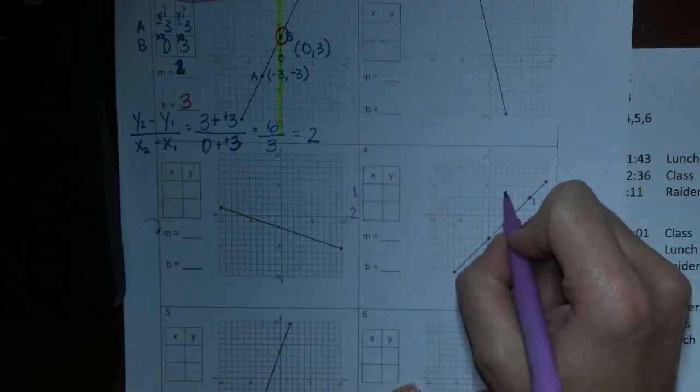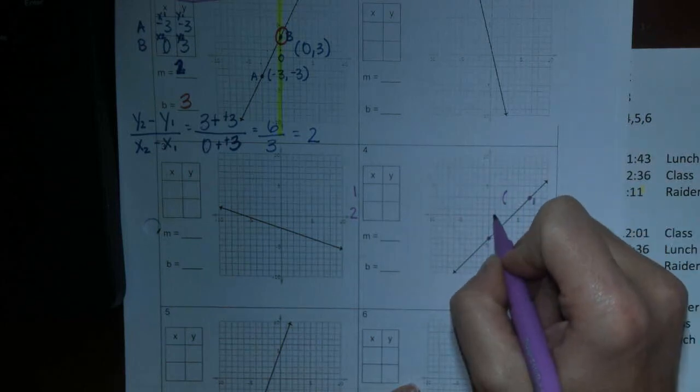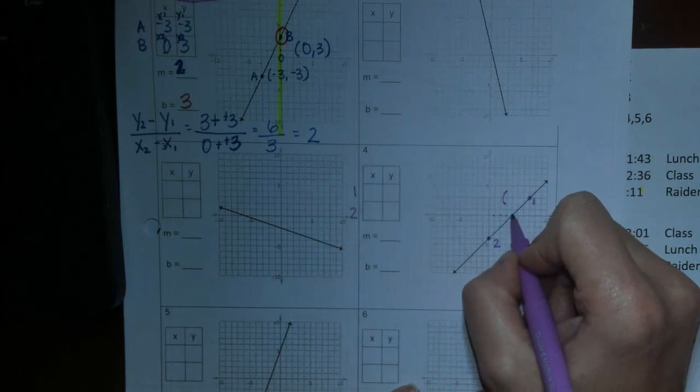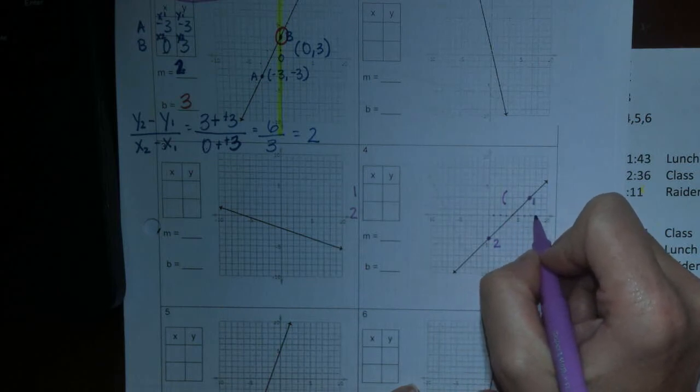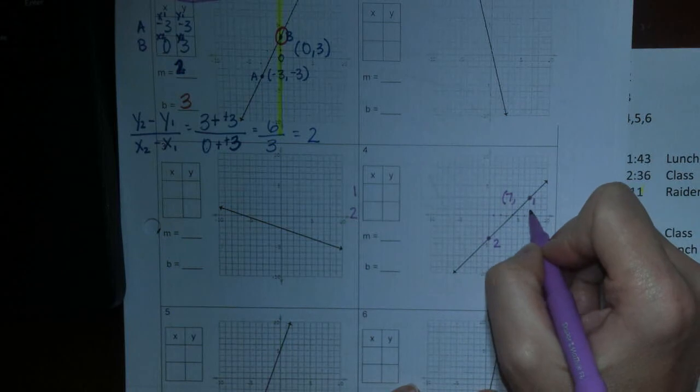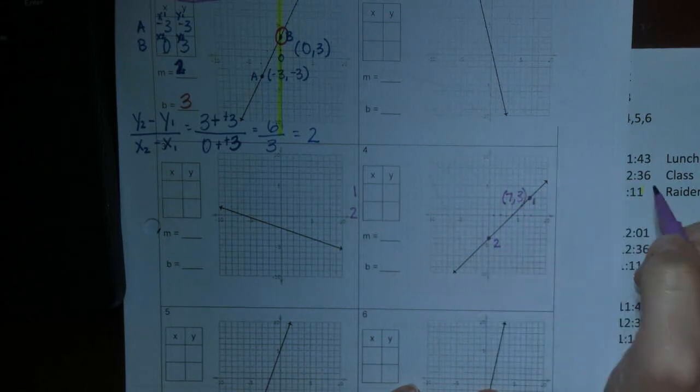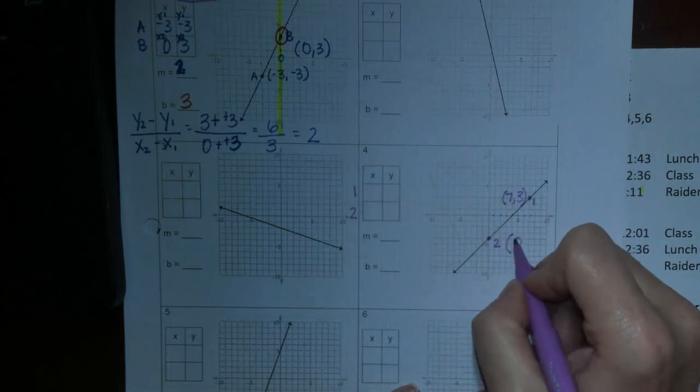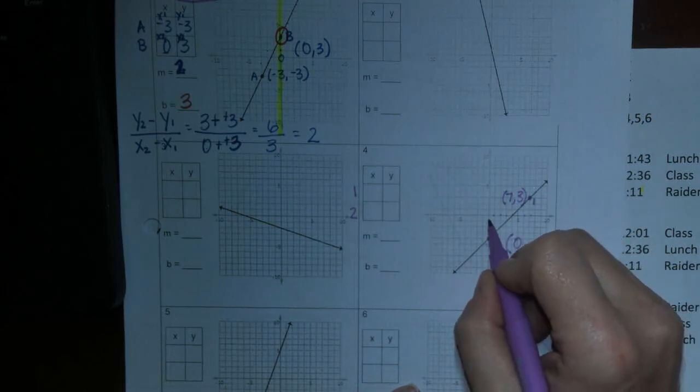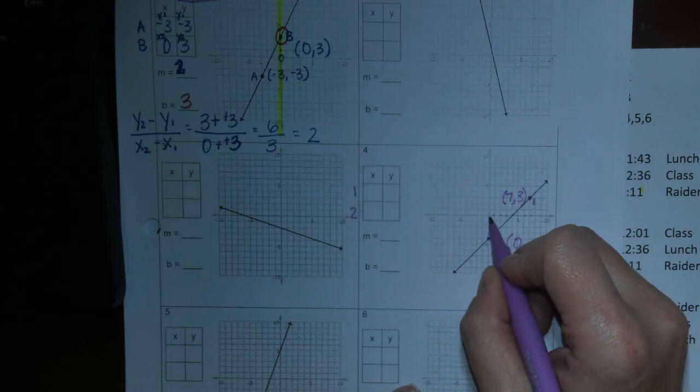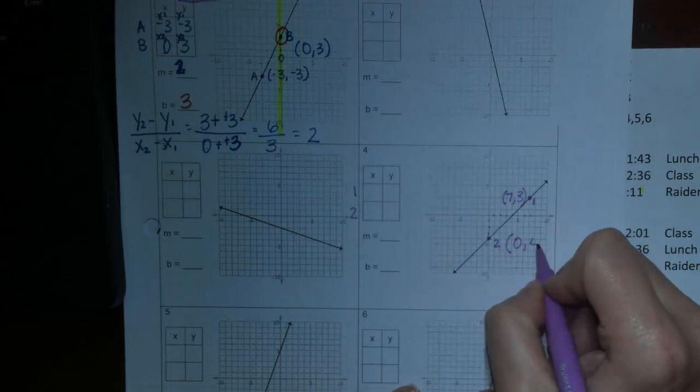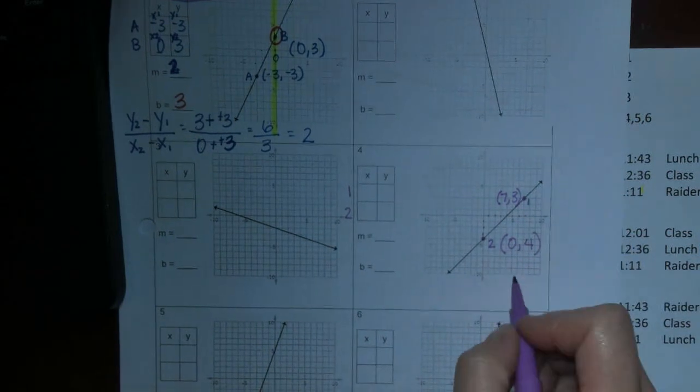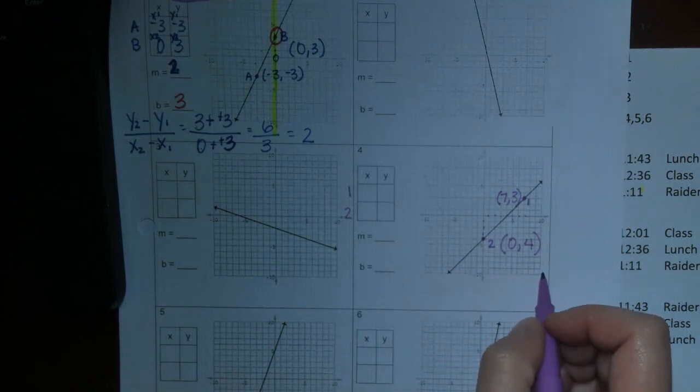So point 1 is, x is 1, 2, 3, 4, 5, 6, 7, 7. And your y is 1, 2, 3. Okay. So point 2, your x is 0. Your y is 1, 2, 3, 4. Oh, look, guys. We have x is 0 and our y is 4.